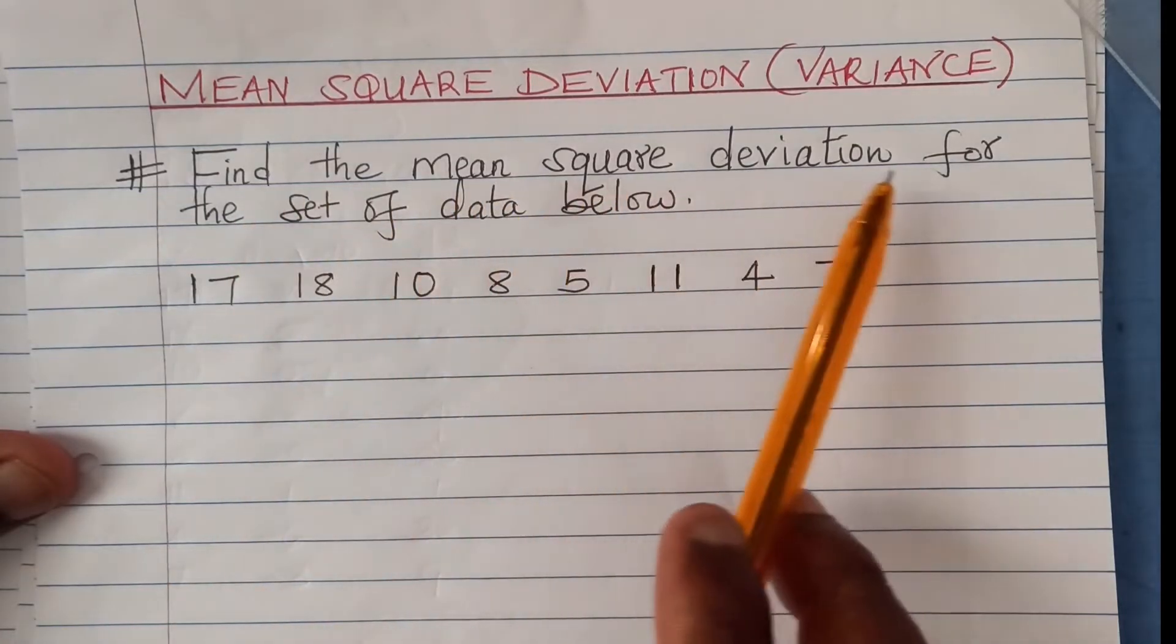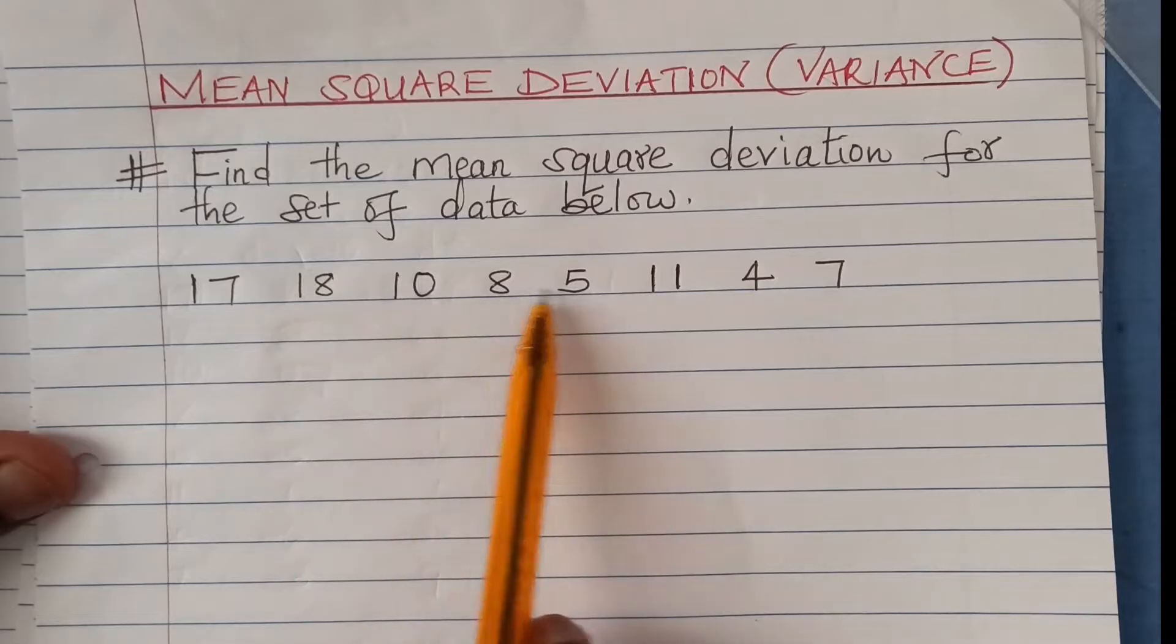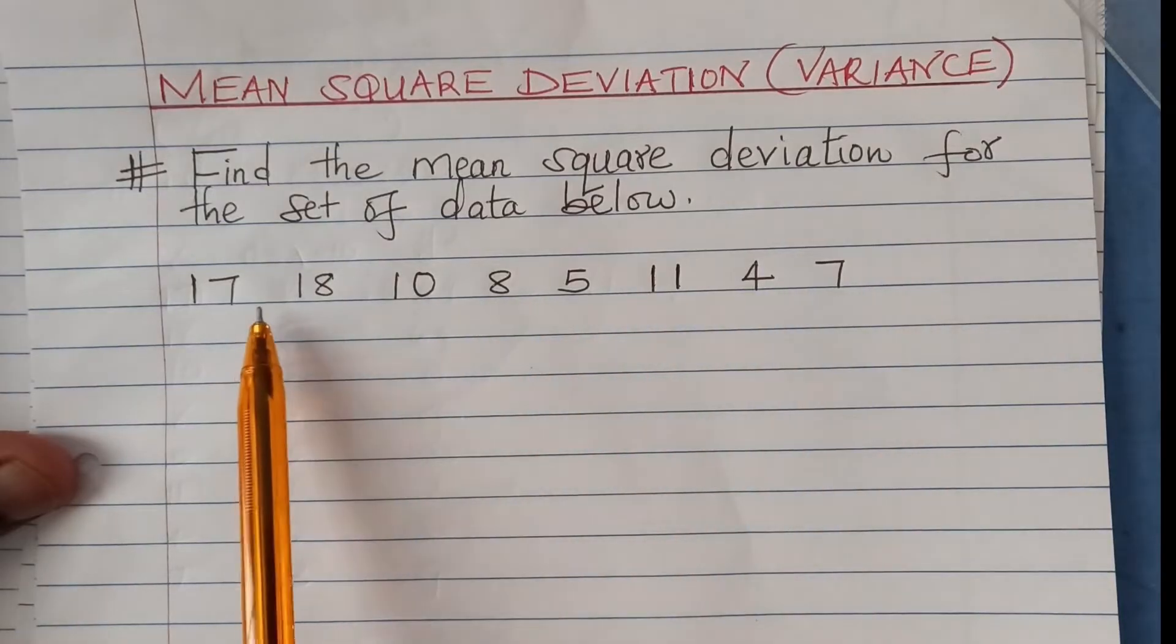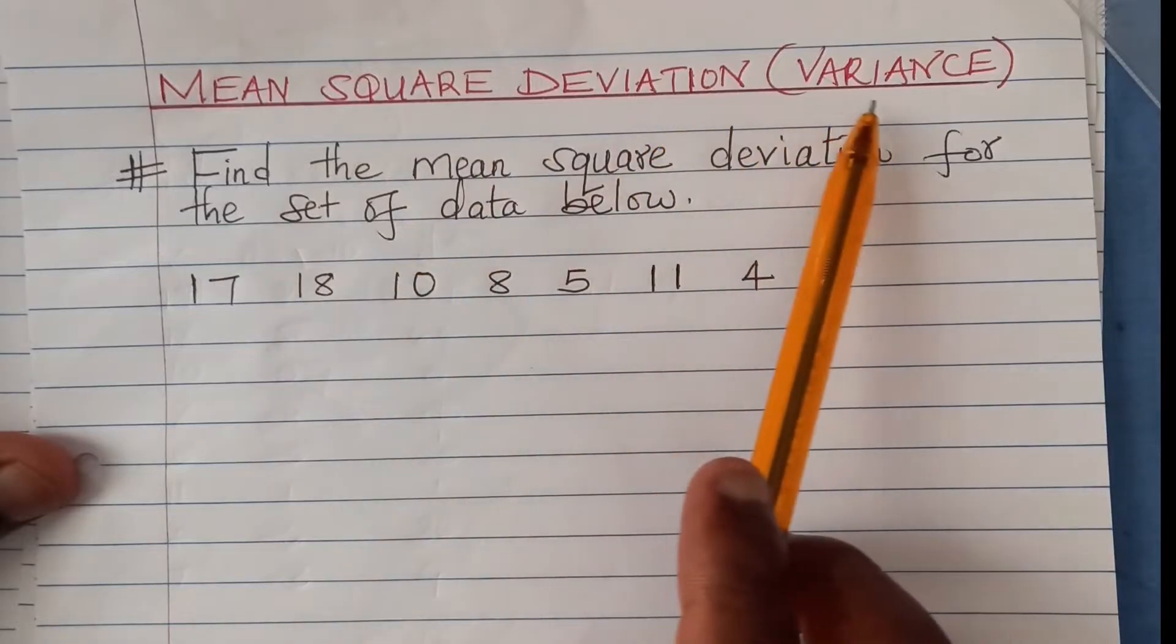Find the mean square deviation for the set of data below: 17, 18, 10, 8, 5, 11, 4, and 7. This one is ungrouped data. You are required to find the mean square deviation, also referred to as the variance.